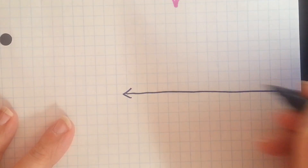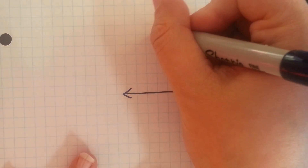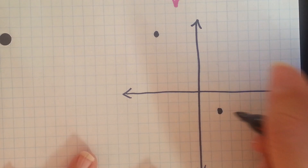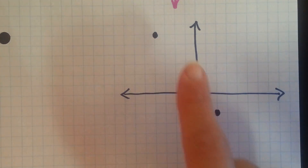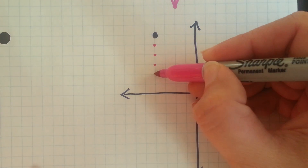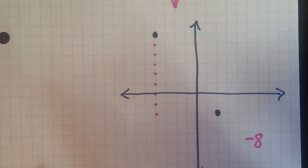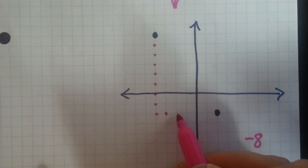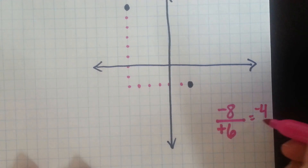Let's look at another example. Say I have another coordinate plane and I have a point way up here and another point down here. We're just going to practice counting from one to the other. Say I started with the top point and I wanted to count down to get to the other point. I would count down eight, so I would have a negative eight. Then I'm going to count over to the right six. Since I went to the right, it's a positive six. Now here I have negative eight over six, which would reduce to negative four over three.